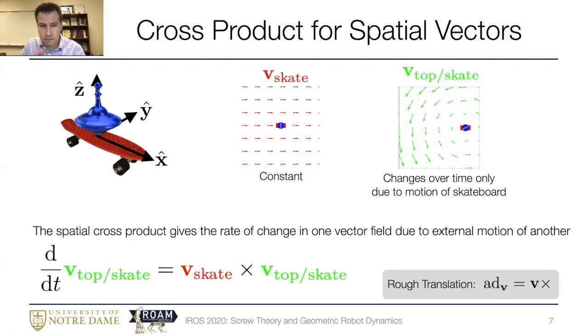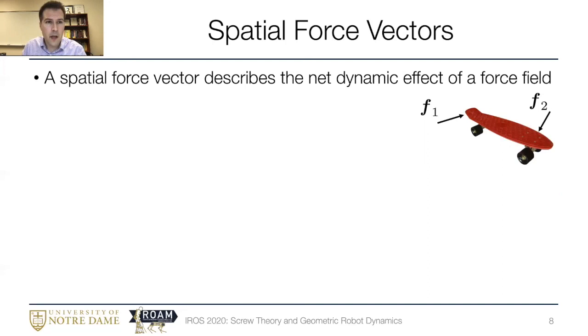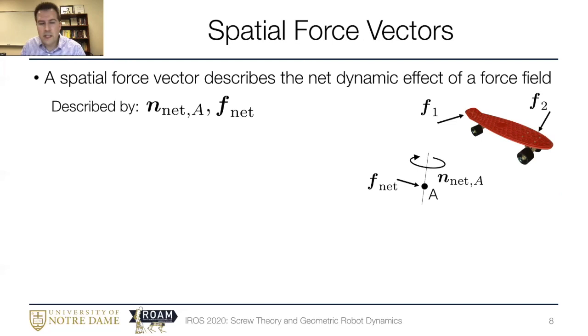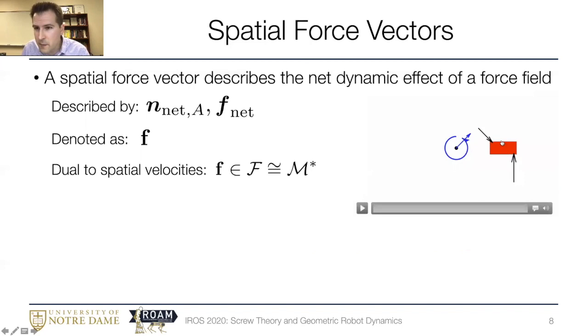Okay now that we understand velocities and accelerations let's take a look at forces. They're a little bit more tricky. As I mentioned I've got our skateboard again and two Cartesian forces script f1 and script f2 acting on it. I'm going to say that the spatial force really describes the net dynamic effect of some force field. And of course if I pick some point a in space I can describe that net effect by a net force and a net moment about this point. So we can describe a spatial force vector with these two quantities. However the overall effect really doesn't depend on point a that point is kind of immaterial so I'll denote by upright f as the abstract spatial vector that represents this net dynamic effect overall. More formally this object lives in a space that can be identified with the dual vector space to the spatial motion vectors.